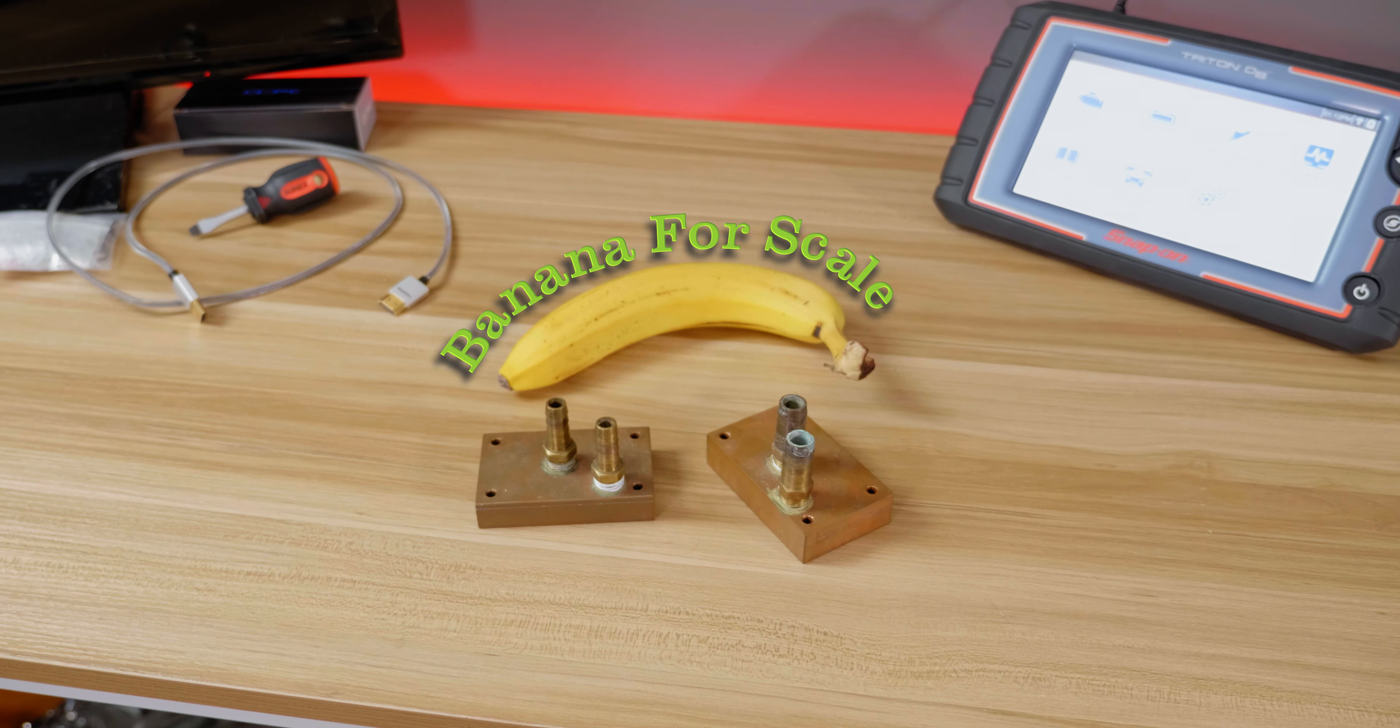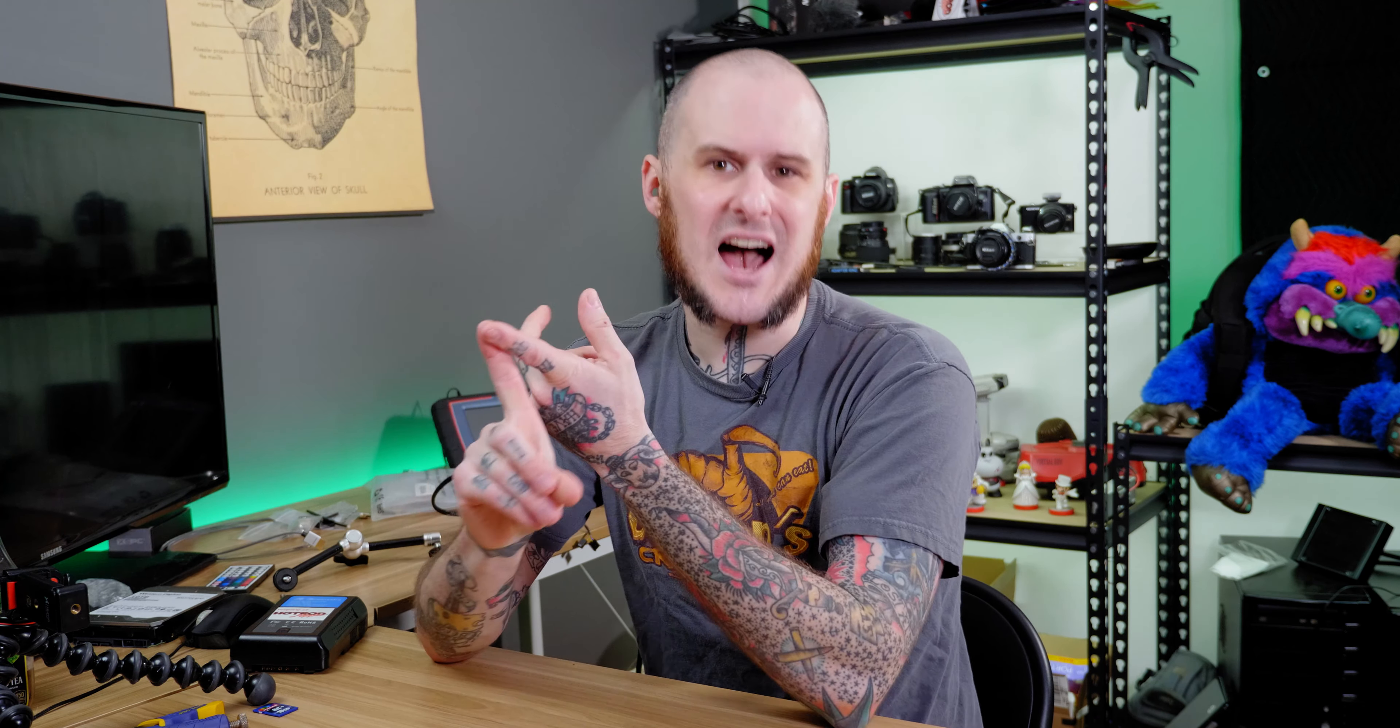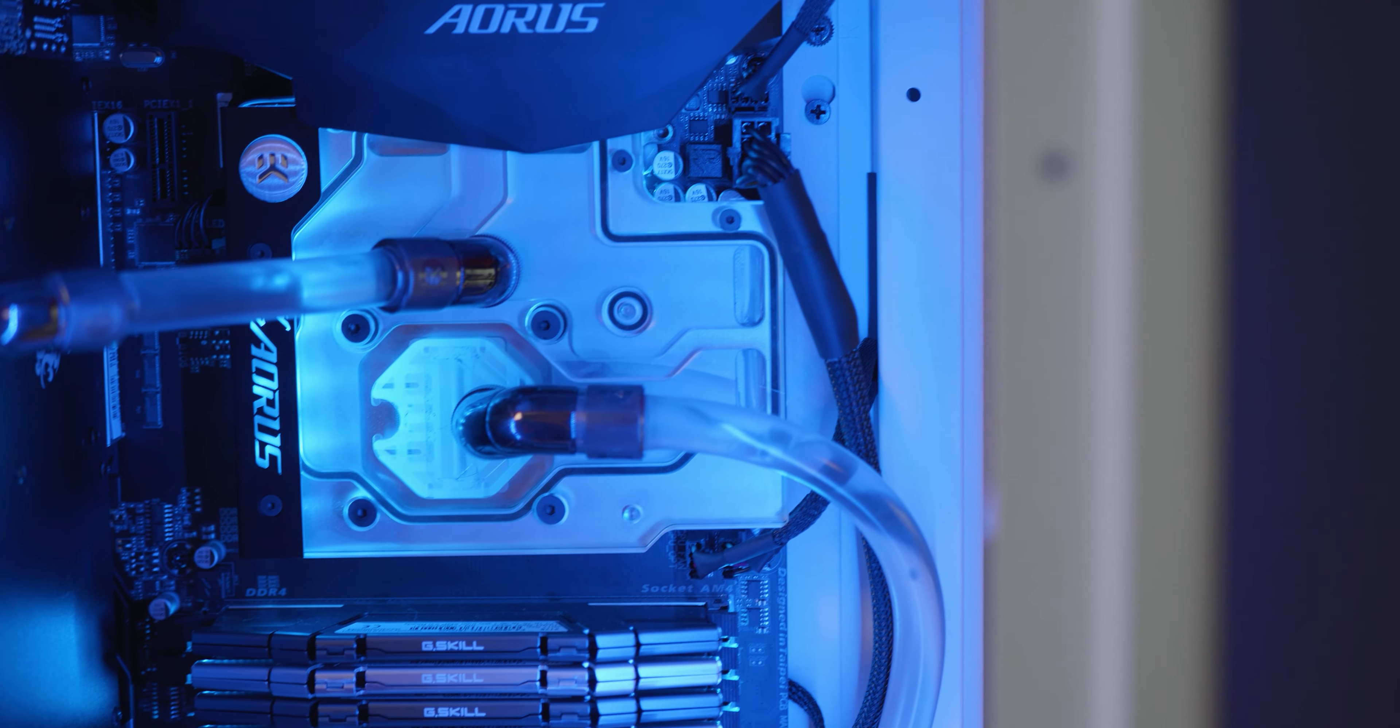They're called maze water blocks because unlike modern water cooling water blocks, they're a whole different animal. Modern blocks have skived fins in them, micro fins that allow for large surface area of heat transfer with jet plates to control the flow of fluid through those fins.